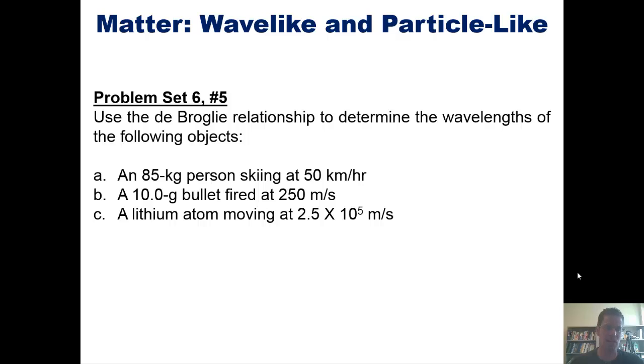That takes us then to another set of problems. Use the de Broglie relationship to determine the wavelengths of the following objects: an 85 kilogram person skiing at this velocity, a 10 gram bullet fired at this velocity, or a lithium atom moving at that velocity. Once again, I'm not going to answer those in this video, but we'll post a link here somewhere on the screen that you can click on to take you to a separate video in which I work these out.